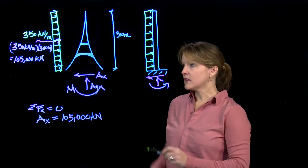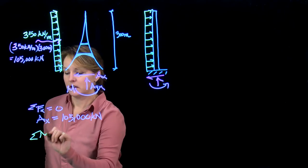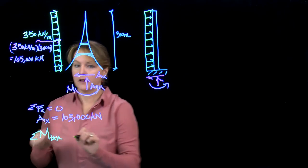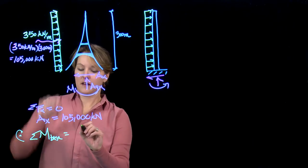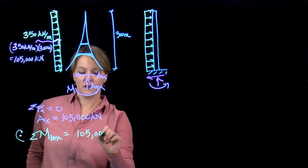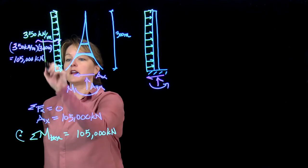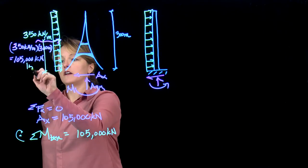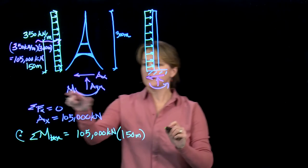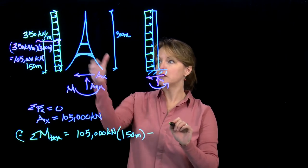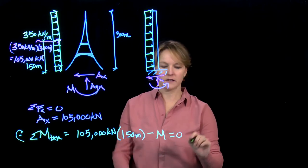So we would do that by summing forces horizontally equals zero, and we would find that AX is going to counteract that applied wind load. We'd also want to look at the moment. So summing the moments, I'm going to sum the moments about the base, the base of the Eiffel Tower. So we have the wind load trying to rotate it clockwise in this case, and that is that force, 105,000 kilonewtons. It's acting, since this is evenly distributed, I would assume it's acting in the middle at 150 meters.